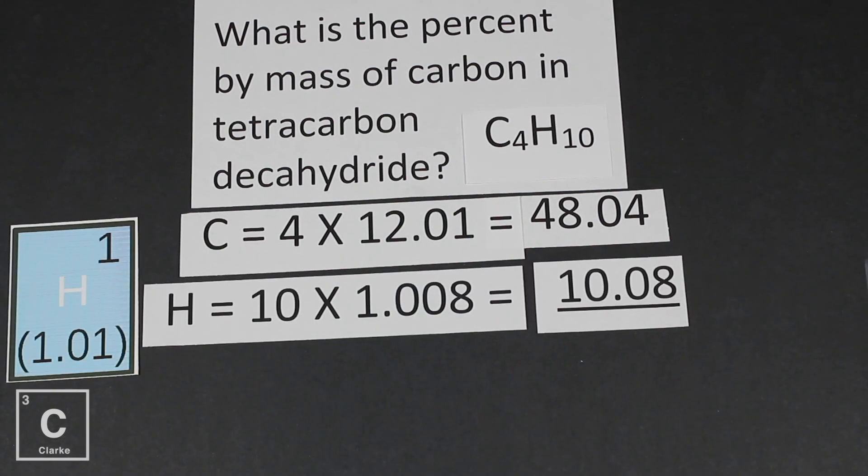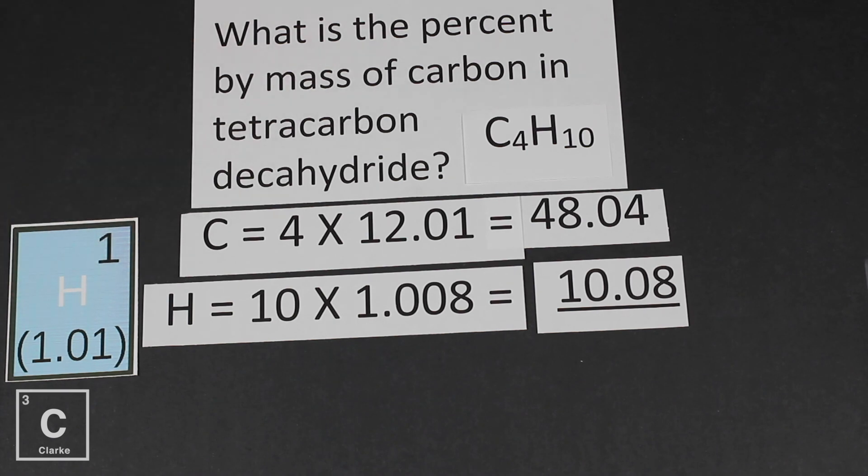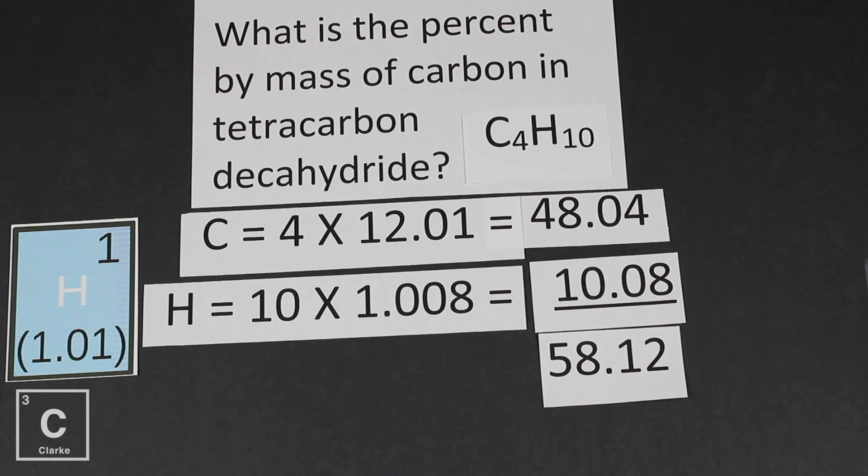Okay, so hydrogen, we have 10 of them. Now I'm realizing there's a little bit of discrepancy here. I've got 1.01. But you know, my periodic table that I use, it uses more decimal points. And I kind of have a lot of them memorized. So I just typed it right on in as 1.008. It's about the same thing. It rounds to 1.01. And so if we multiply those numbers together, we get 10.08. So the total molar mass is 58.12.